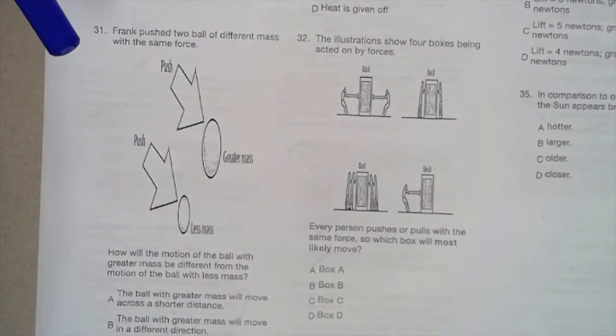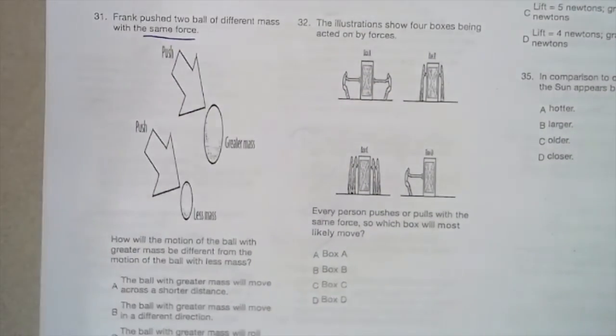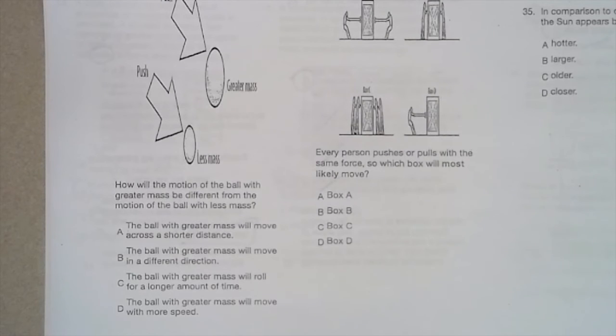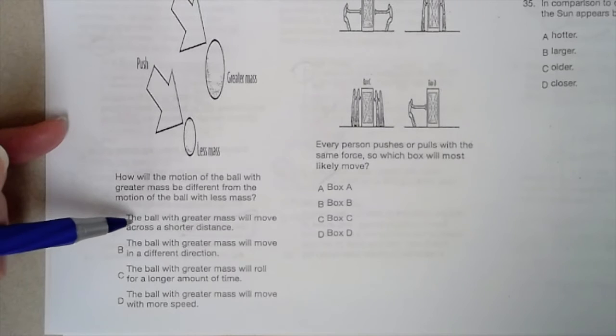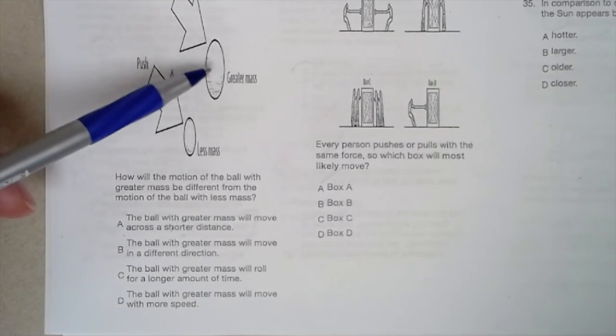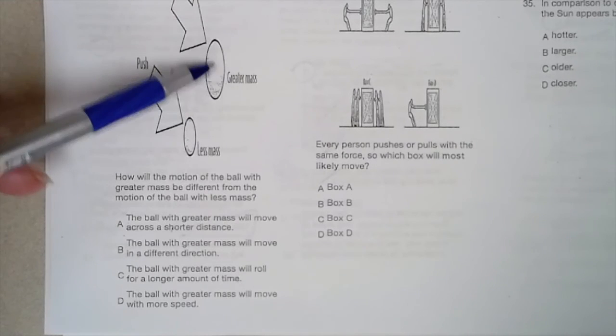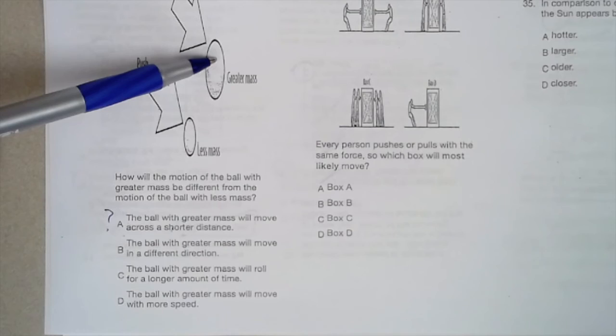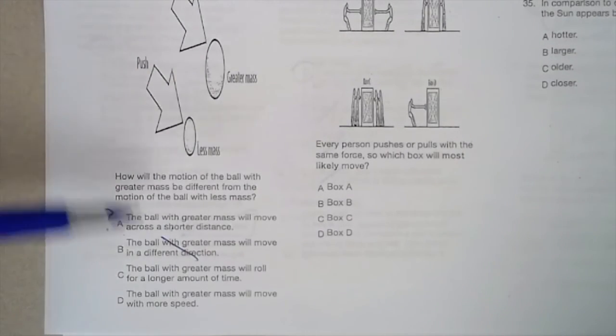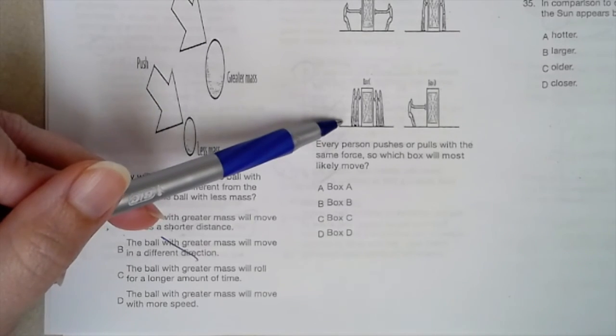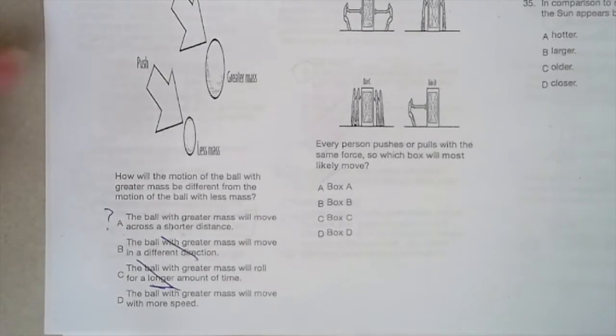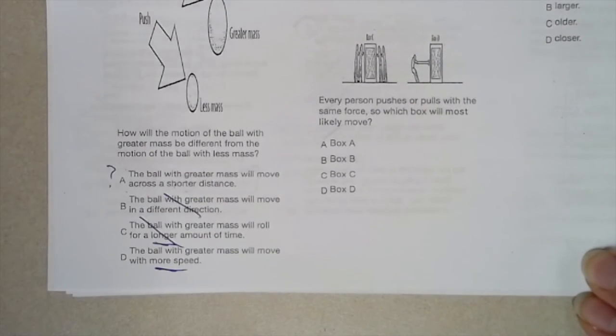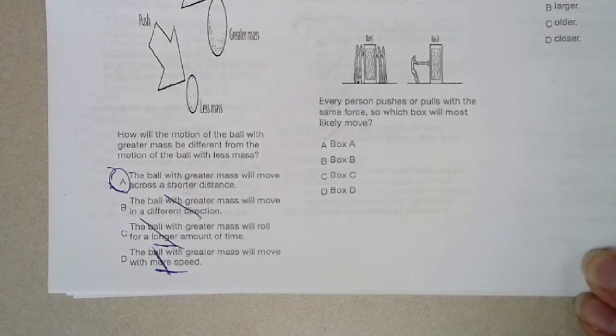Frank pushed two balls of different masses with the same force. How will the motion of the balls with greater mass be different than the motion of the ball with the less mass? The ball with the greater mass will move across a shorter distance. So if he pushes this ball at the same force that he pushes this one, this ball is not going to go as far. That sounds right. Let's read the other ones. The ball with the greater mass will move in a different direction. No, it's going to go in the same direction. It's not going to change that. The ball with the greater mass will roll for a longer amount of time. Not unless he pushes it harder. Not going to go for a longer amount of time. The ball with the greater mass will move with more speed. It's not going to move with more speed. It's heavier. He needs to push it harder, and he didn't. So it's A. The ball with the greater mass will move across a shorter distance.